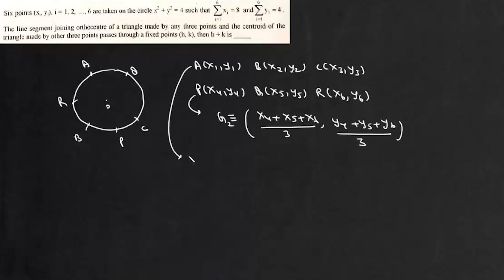Now centroid of this triangle, suppose there is centroid of second, centroid of first triangle, it is x1 plus x2 plus x3 by 3 and y1 plus y2 plus y3 by 3. So circumcenter for this triangle, it is at origin.